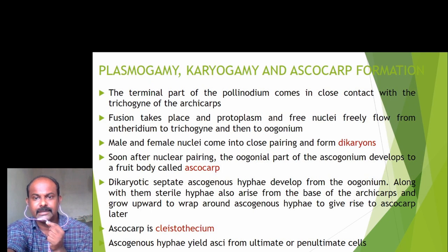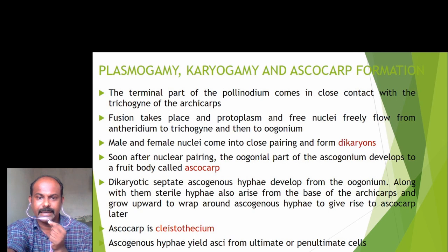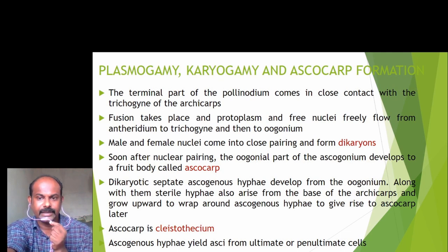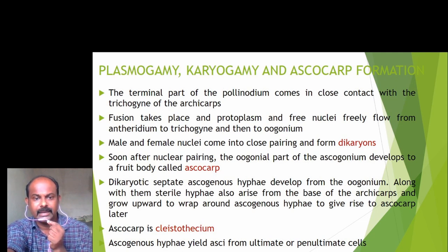The terminal part of the polynodium comes in close contact with the trichogyne of the archicarp. Fusion takes place and protoplasm and free nuclei freely flow from the antheridium to the trichogyne and then to the oogonium. Male and female nuclei come into close pairing and form dikaryons. Soon after nuclear pairing, the oogonial part of the ascogonium develops to form a fruit body called the ascocarp. Dikaryotic septate ascogenous hyphae develop from the oogonium. Sterile hyphae also arise from the base of the archicarp, grow upward to wrap around the ascogenous hyphae, and this gives rise to the ascocarp, which is spherical in shape and is called the cleistothecium.